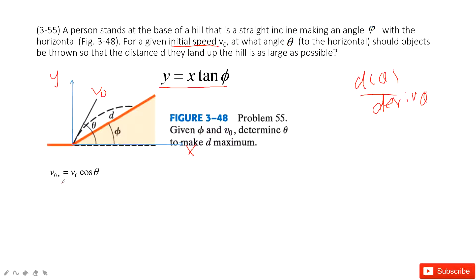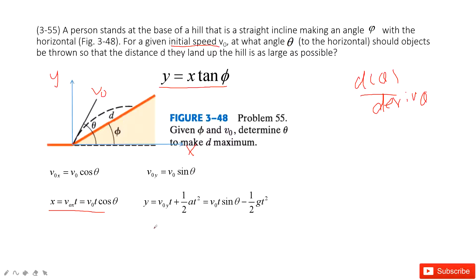For the projectile motion, we can get the initial velocity at the x-component and also at the y-component. The velocity at the x-component is constant, so x equals v0x times t. For the y-component, y equals v0y times t plus one-half a times t squared. The acceleration pointing down is g, so we keep the negative sign there. This gives us the x and y positions.